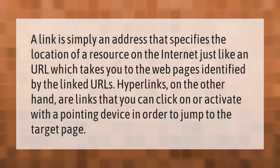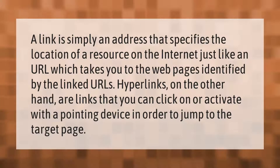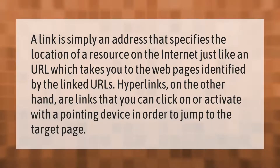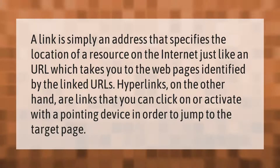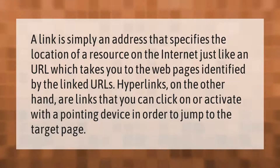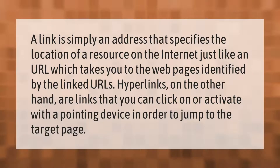A link is simply an address that specifies the location of a resource on the internet, just like a URL, which takes you to the web pages identified by the link. Hyperlinks, on the other hand, are links that you can click on or activate with a pointing device in order to jump to the target page.